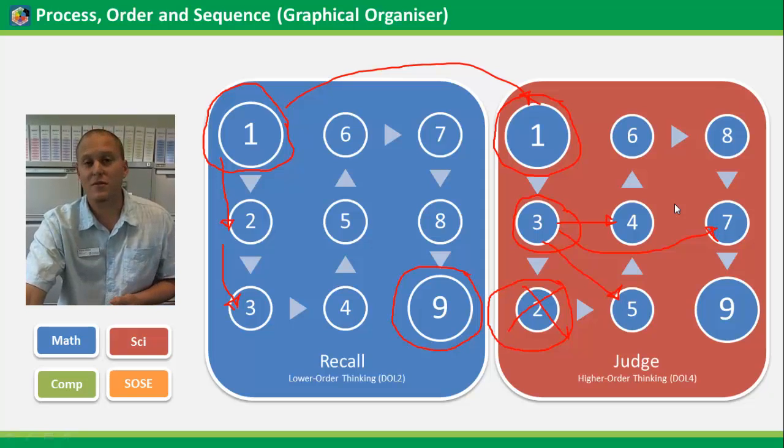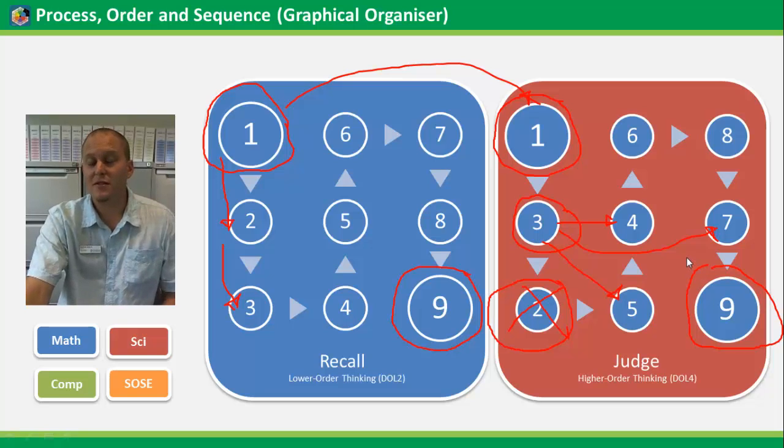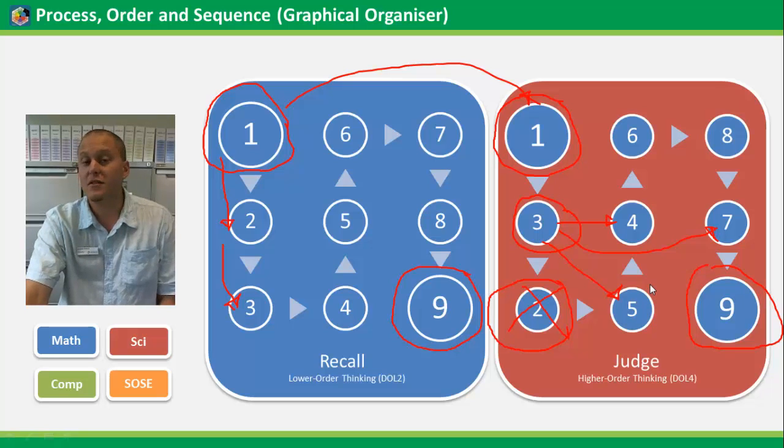Here the students can start making some value judgments based off the sequences when they're moved in a different order. In Dole 4 this is systems analysis. If I mess with the system does the final outcome that we hope to achieve or the historical event that did occur would it still actually occur? This is great for group learning. They can start to debate and discuss them out. It's great for TOK and they can start saying how do I know what I know based off the steps?